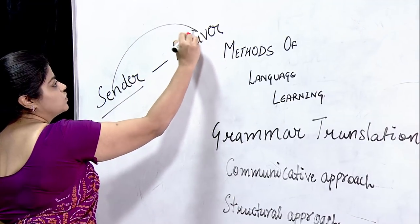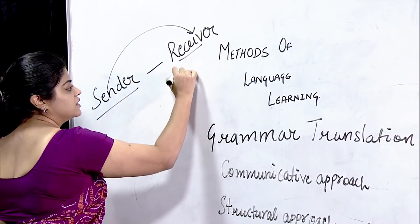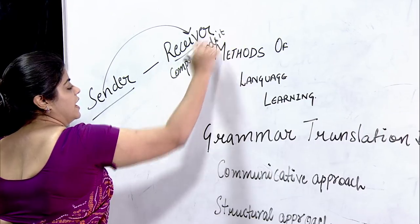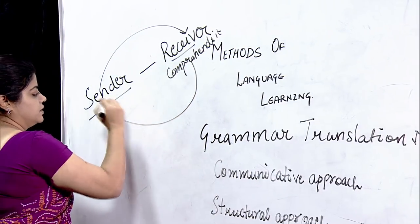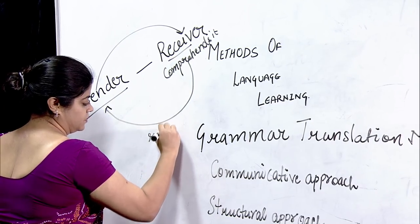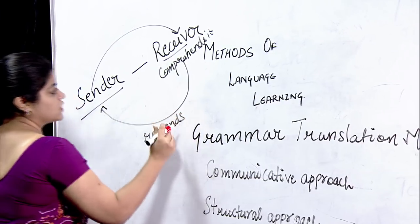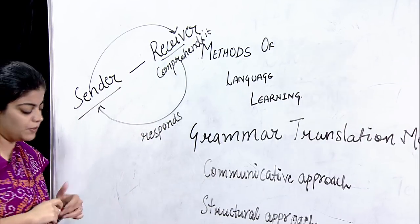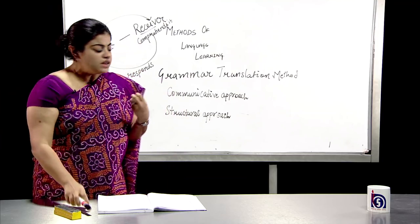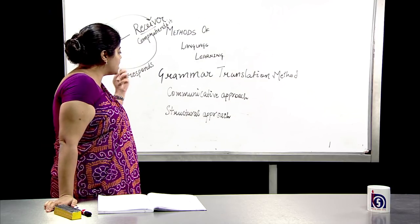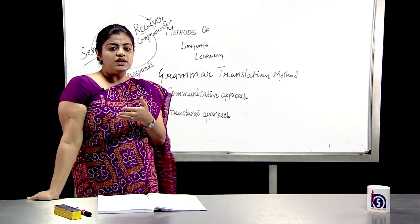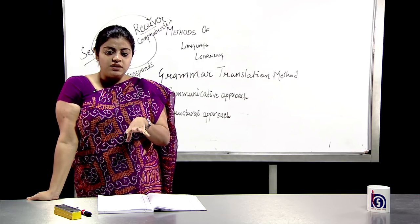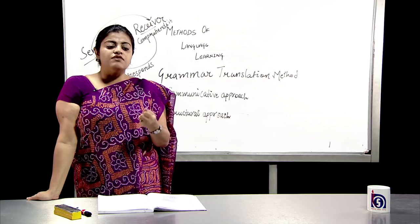The sender sends the message to the receiver, who comprehends it. This is the whole cycle of communication — we need at least two persons. The communicative approach emerged because educationists and linguists felt that the grammar translation method was not equipping students for real-life communication.